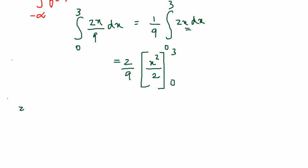I am going to apply upper limit minus the lower limit. So it is going to be 9 by 2. Of course, the other limit is 0, so the whole thing will become 0. So these two can get cancelled and so I will get 1.